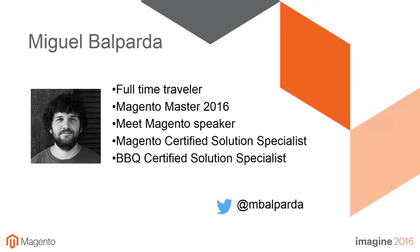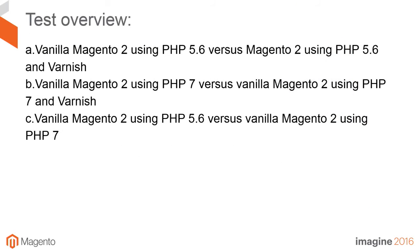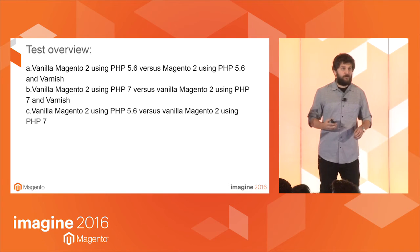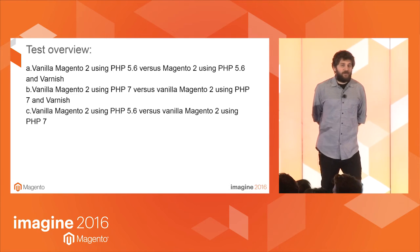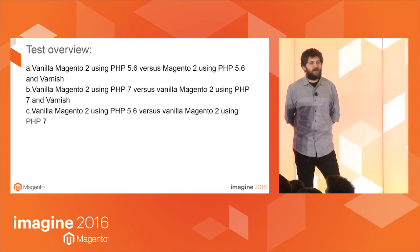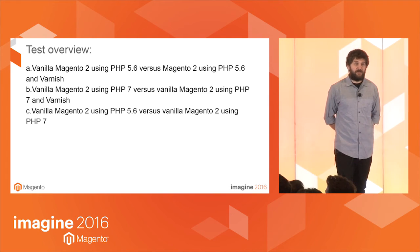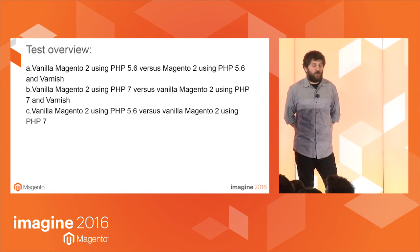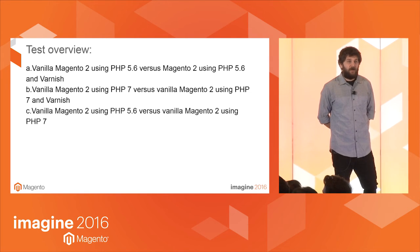We will also provide all benchmarking software configurations so any curious parties can reproduce our tests as desired. To demonstrate the best practices we did three pairs of software configurations: first we tested vanilla Magento 2 using PHP 5.6 versus the same software using PHP 5.6 and Varnish, then we did the same with PHP 7, and finally we compared vanilla Magento 2 using PHP 5.6 versus vanilla Magento 2 using PHP 7.